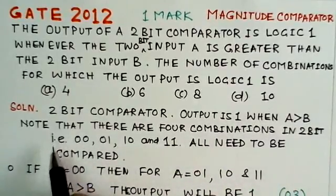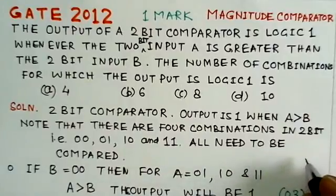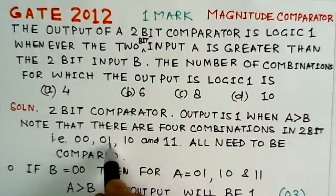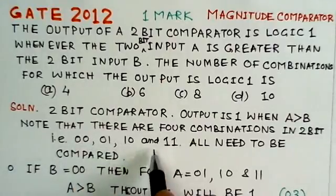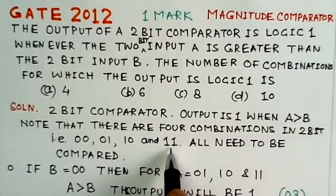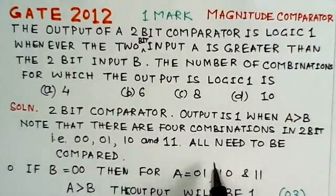So for a 2-bit number you will get all four combinations like here: 00, 01, 10, and 11. There are four combinations for number A as well as for number B. What we have to do is we have to compare these.